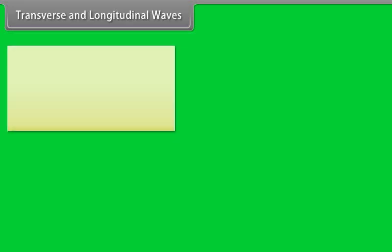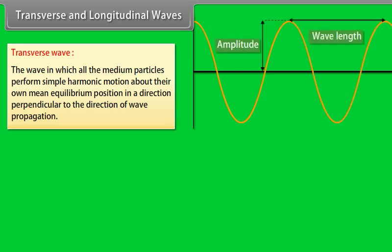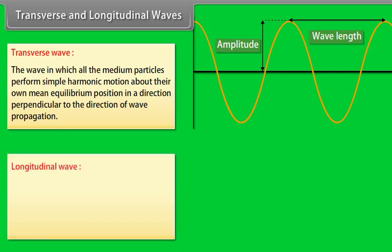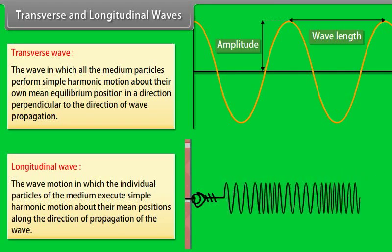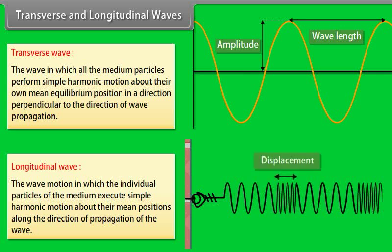Transverse and longitudinal waves. A transverse wave is one in which all the medium particles perform simple harmonic motion about their own mean equilibrium position in a direction perpendicular to the direction of wave propagation. Longitudinal wave motion is that wave motion in which the individual particles of the medium execute simple harmonic motion about their mean positions along the direction of propagation of the wave.